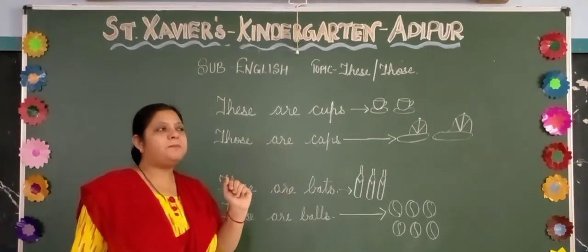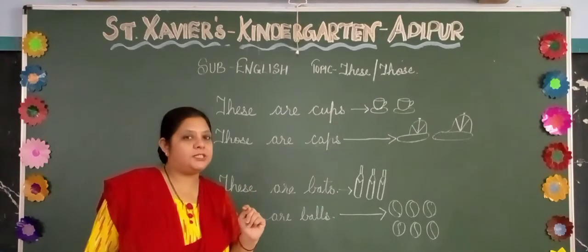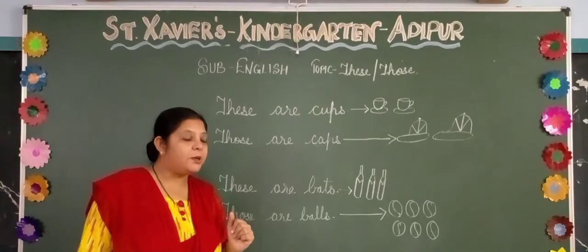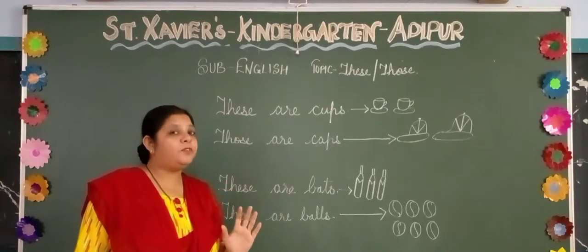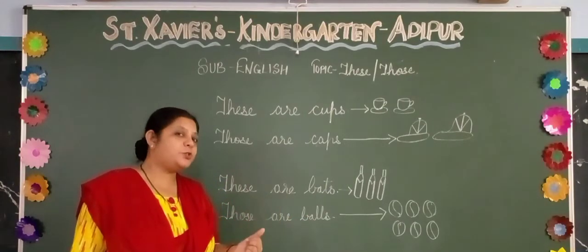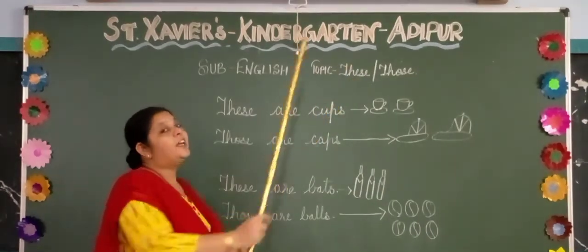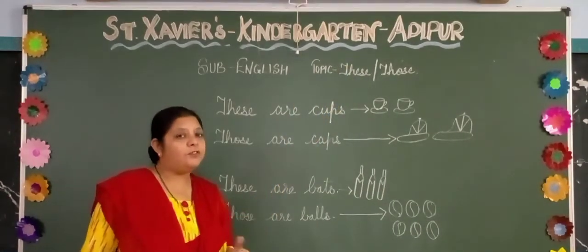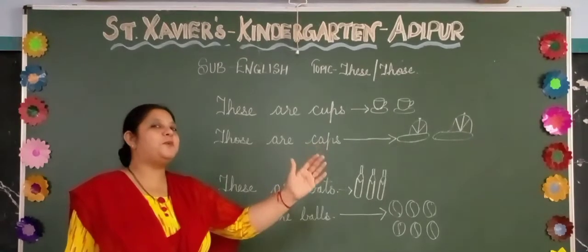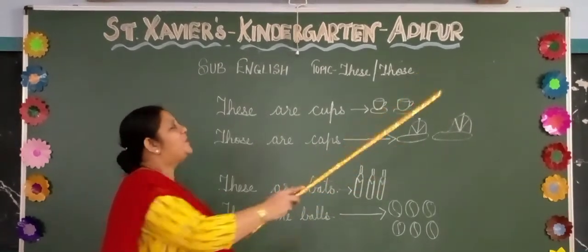For example, if there is one tree near you, you will say 'this tree.' And if that tree is far, you will say 'that tree.' But if there are many trees and they are near to you, you will say 'these.' And if there are many trees but they are far from you, you will say 'those.'